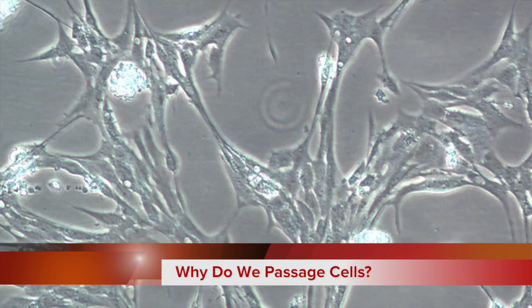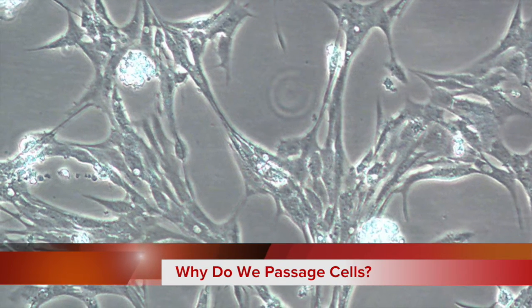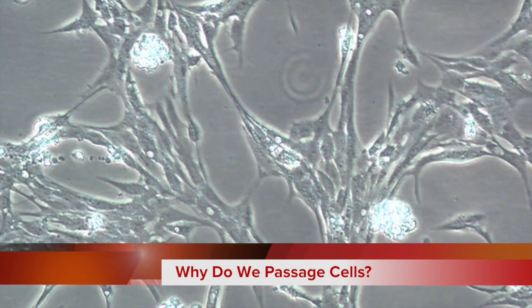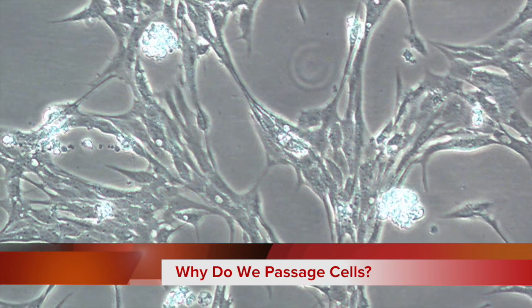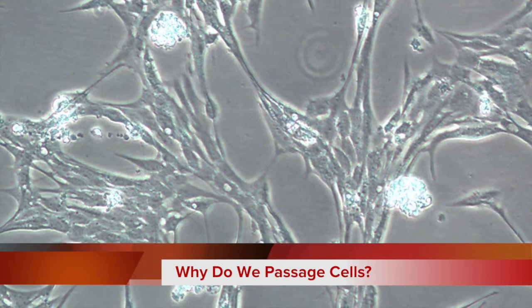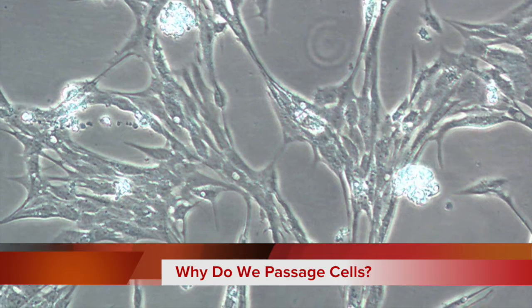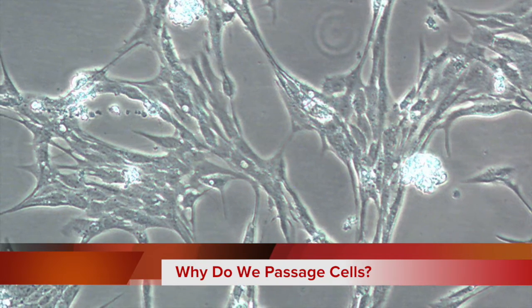As the confluency of the cells in your dish rises, the cellular growth will slow as a result of contact inhibition. Therefore, the cells should be passaged when the confluency exceeds 70-80% as a rule of thumb, or when the cell density exceeds the capacity of the medium.